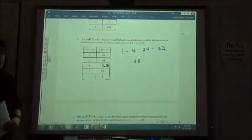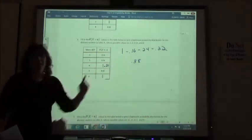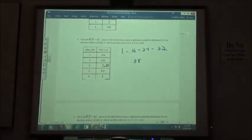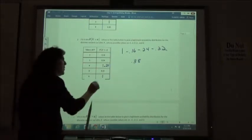If that one's 0.21, what would this one down here have to be in order to add up to the 0.38? 0.17, right?